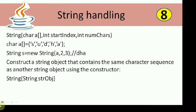Since the character array indexes start at zero, start index 2 means starting from 'd', and if you want three characters then 'd','h','a' will be printed. Another constructor lets you construct a string object that contains the same character sequence as another string object — you simply pass another string object into the constructor. The newly created string will have the same character sequence.